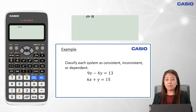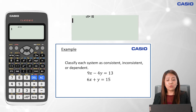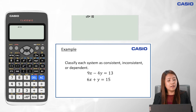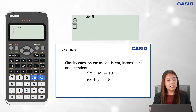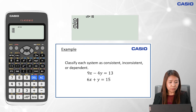Let's have an example. Our task is to classify each system as consistent, inconsistent, or dependent. Let's get the ratio of the coefficient of x and the coefficient of y and the constant terms. First, let's key in the coefficient of x. We input 9 as the coefficient of x of the first equation, then the fraction key followed by the coefficient of x of the second equation. Then arrow right.